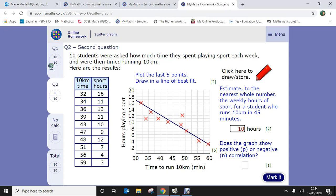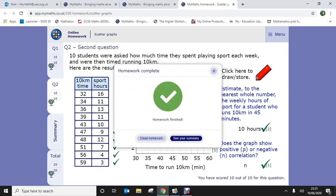Does the graph show positive or negative correlation? Remember, positive is going up, negative is coming down. So this shows a negative correlation. And then again, click mark it.